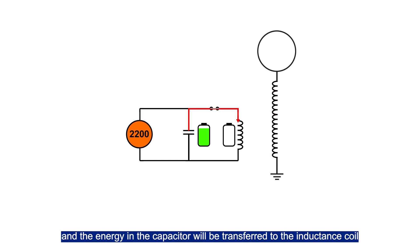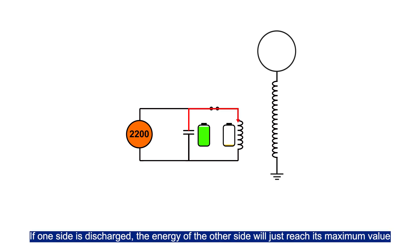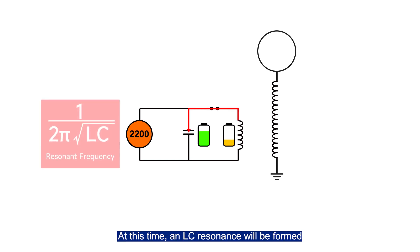And the energy in the capacitor will be transferred to the inductance coil, and then the energy in the inductance coil will be transferred back to the capacitor and so on. If one side is discharged, the energy of the other side will just reach its maximum value. At this time, an LC resonance will be formed.